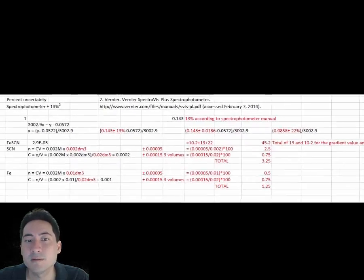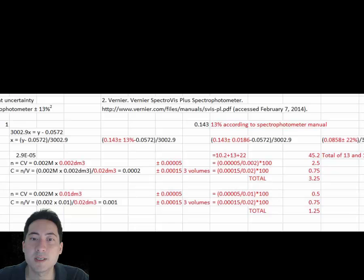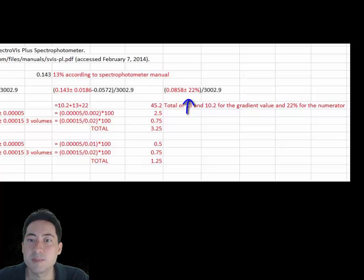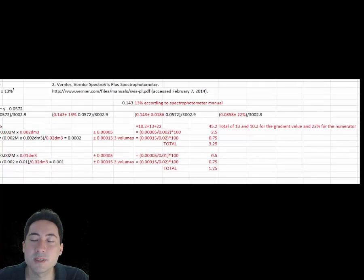We can now work out the uncertainty for the unknown. The spectrophotometer manual states the uncertainty at 13%. As the numerator is addition, we add the actual uncertainty, which then changes the percent uncertainty from 13% to 22%.